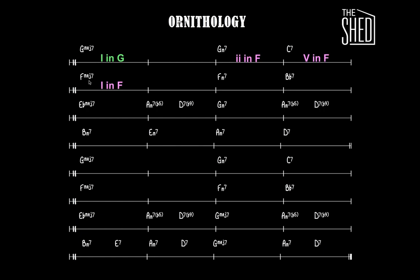We have that for two measures, and then that major chord becomes minor, and that goes to a dominant to a major. It could be a 2-5, so let's look at the roots — up a 4th, up another 4th — so it is a 2-5-1 in the key of E-flat major.